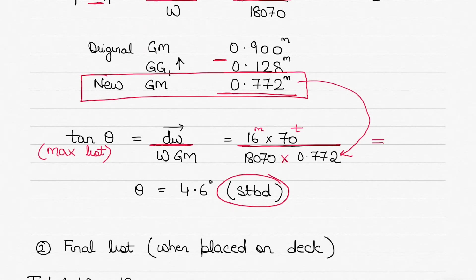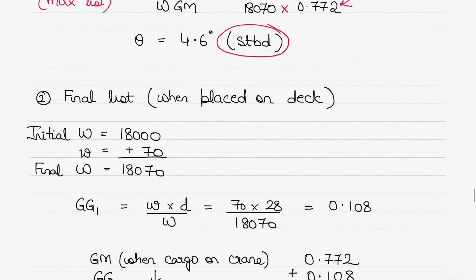Just to verify the calculation: 16 × 70 ÷ 18,070 ÷ 0.772 = 0.0803, and tan inverse of that gives 4.59, or 4.6 degrees to starboard.